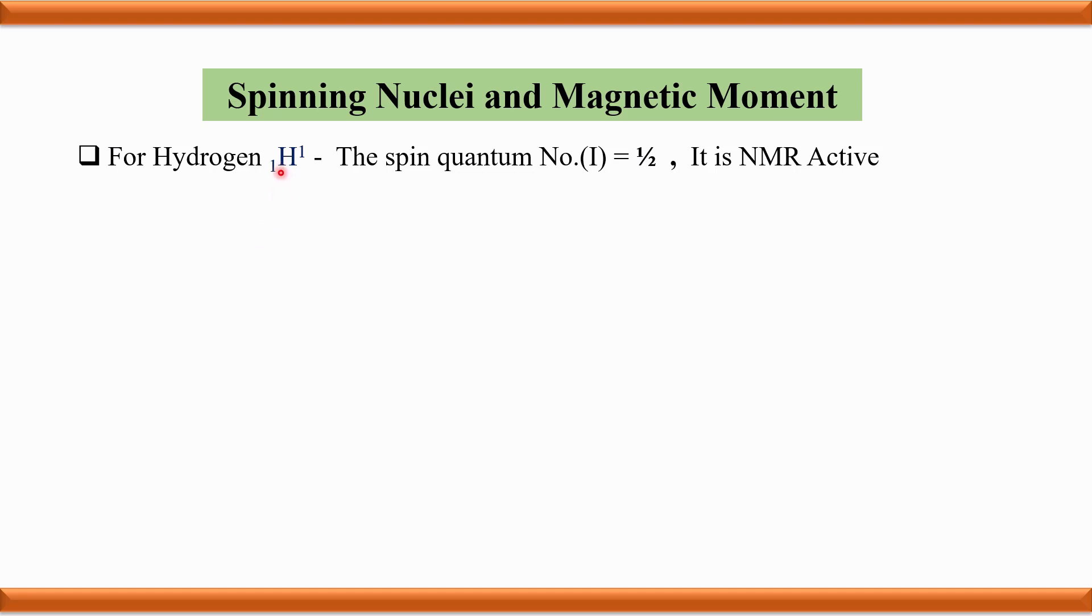The atomic number of hydrogen is 1, and its mass number is 1. As both the atomic number and mass number are odd, the nucleus of the hydrogen atom is magnetic in nature. Its spin quantum number I equals 1/2. Therefore, it is NMR active.